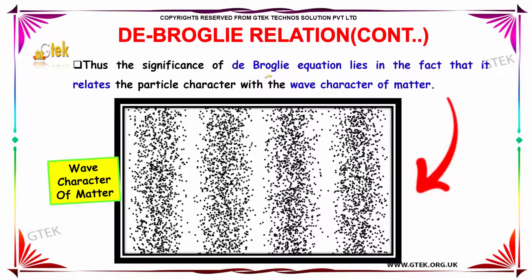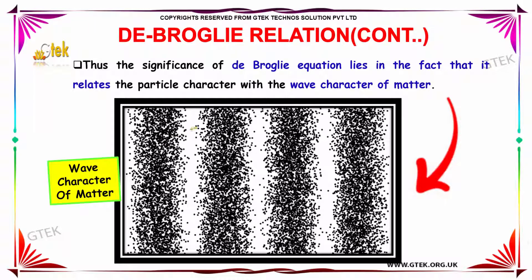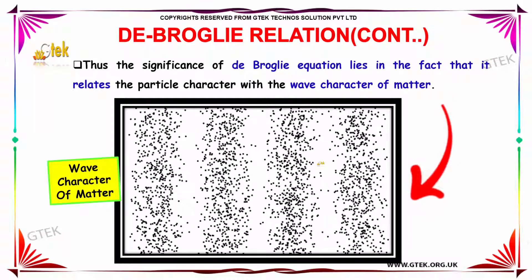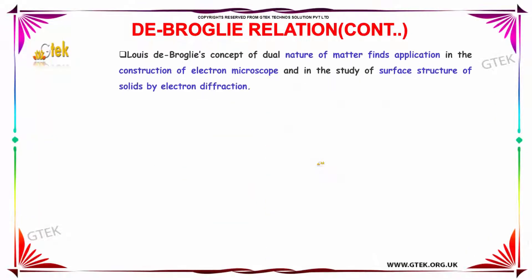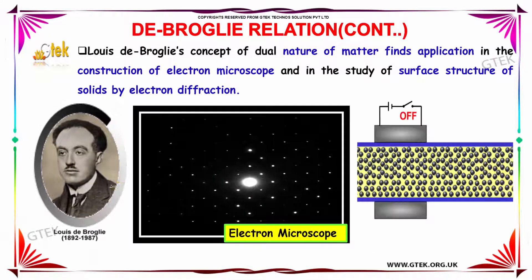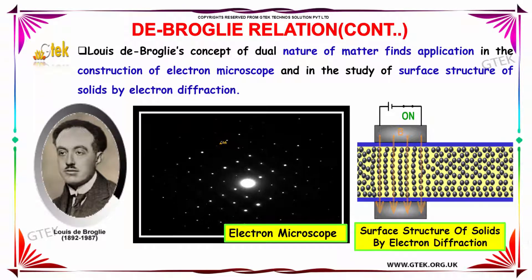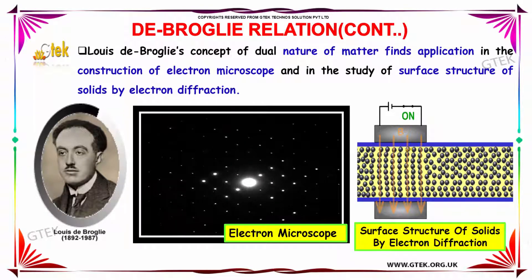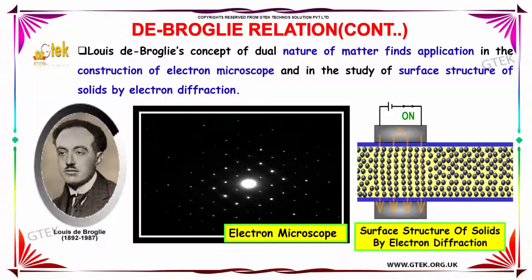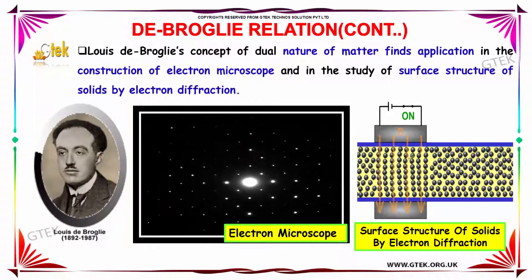The significance of the de Broglie equation lies in the fact that it relates the particle character with the wave character of matter. The concept of dual nature of matter finds application in the construction of electron microscopes and in the study of surface structure of solids by electron diffraction.